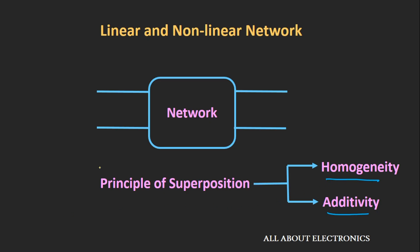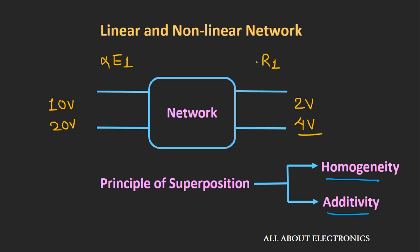Let's first see the property of homogeneity. Assume we have an electrical network where applying 10V as input gives 2V as output — one-fifth of the input. Now if we scale up the input by a factor of 2, making it 20V, the network following homogeneity should give 4V at the output — the response is also scaled by the same factor. In general, if E1 is the excitation and R1 is the response, then scaling the excitation by factor α should also scale the response by α. That is the property of homogeneity.